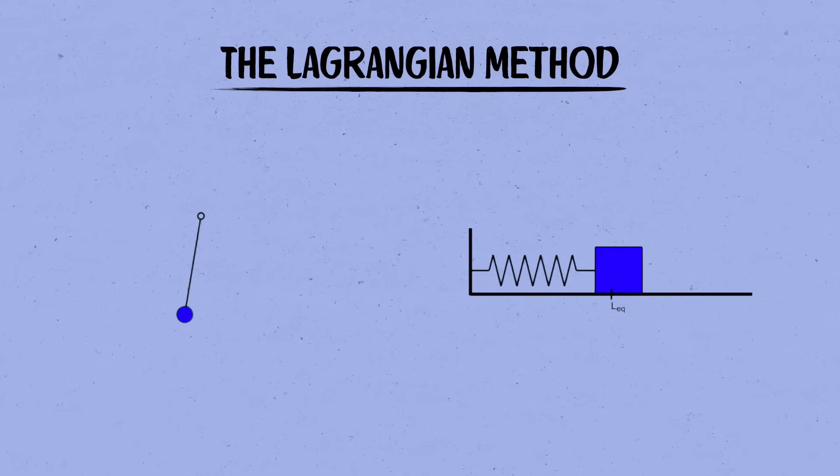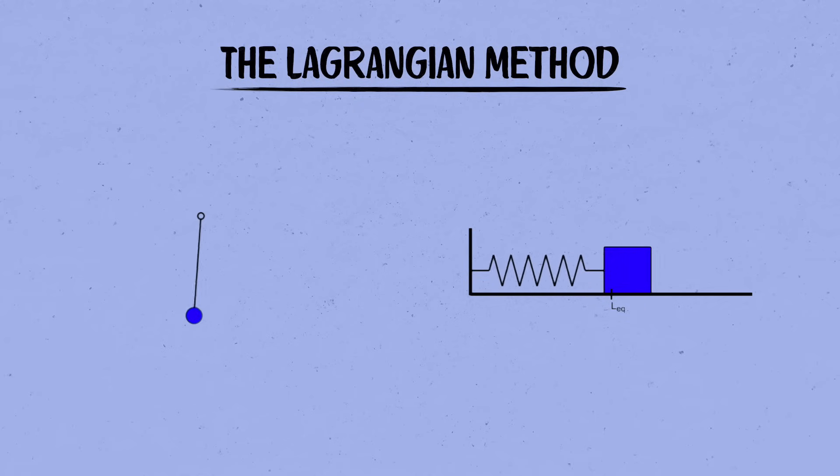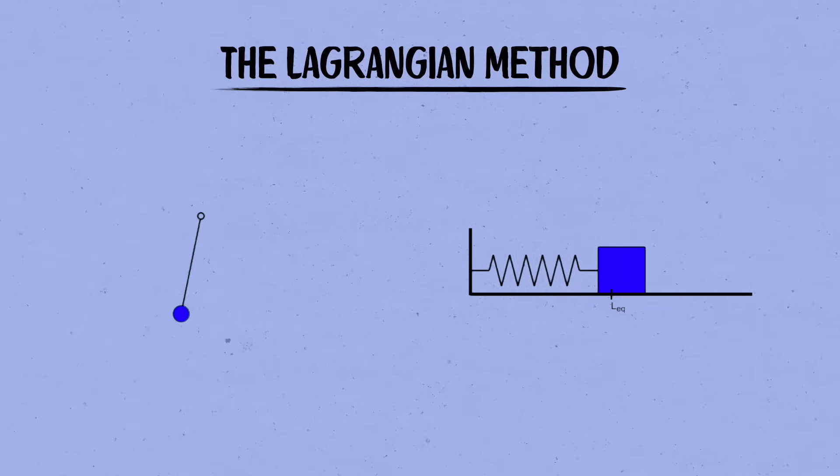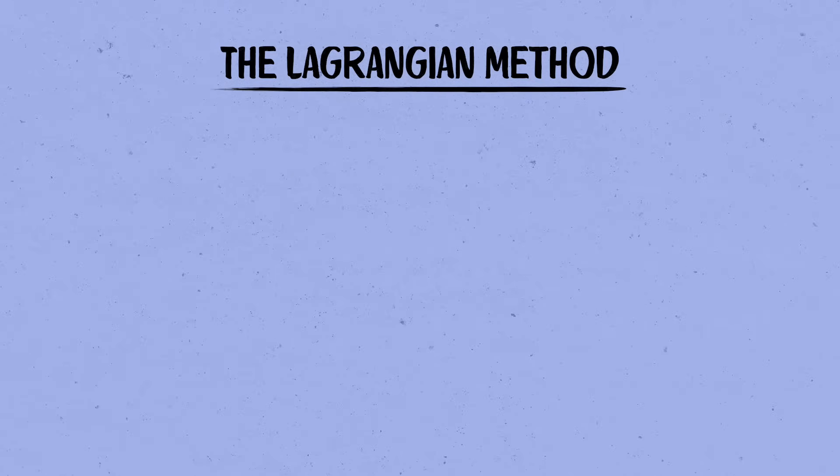In previous videos, I've told you about how instead of using f equals ma, we can formulate particle mechanics using a Lagrangian and applying the principle of least action. I'll link a video about that up in the corner. When it comes to solving classical mechanics problems with pendulums and springs and so on, whether you use f equals ma or a Lagrangian is more or less a matter of convenience. But in field theory, the Lagrangian approach is fundamental. We define a field theory by writing down its Lagrangian.